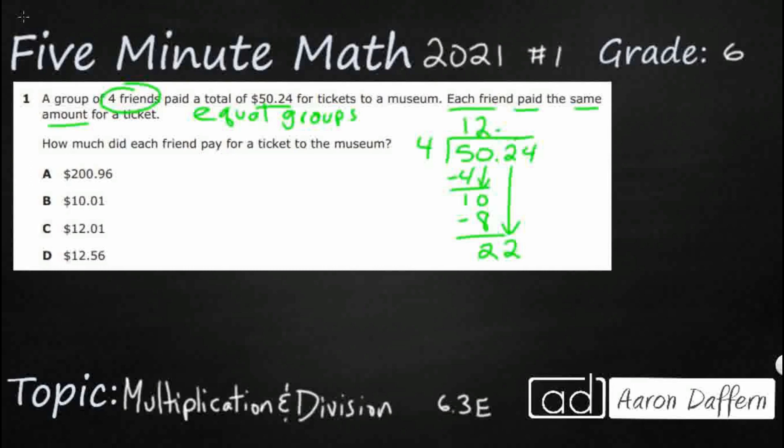Four goes into 22 five times, so that's going to be 20. And then we've got one more left. And since it is money, it is going to go in evenly. That's going to make it nice. Four goes into 24 six times.